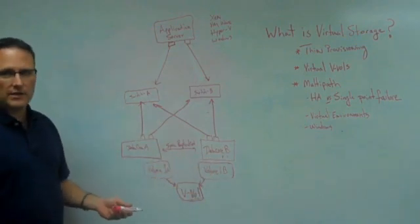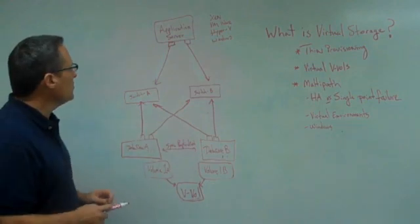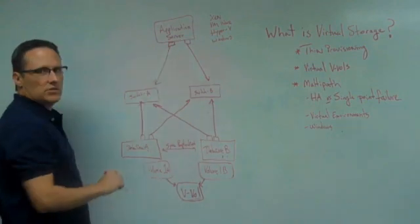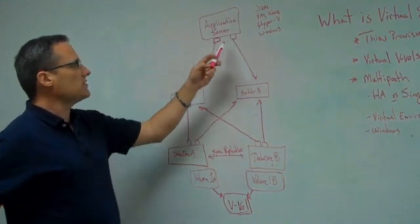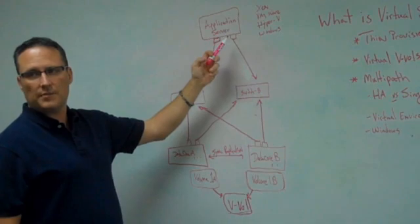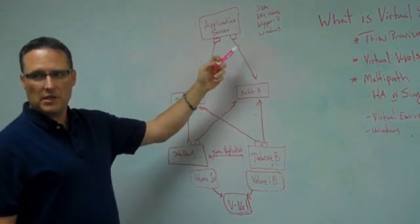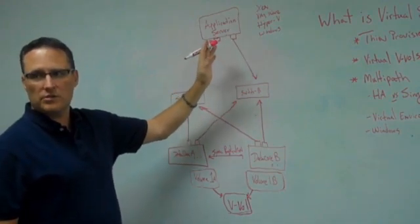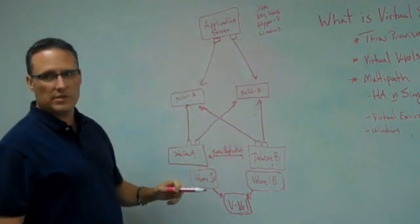Now, in order to make that truly multi-path and high availability, what we do is we have our application server. And in our application server, they're going to usually have a couple NICs. If it's a Windows application server, they're probably teamed. If it's a Xen server, usually I like to use HBAs. There's lots of ways to do this.